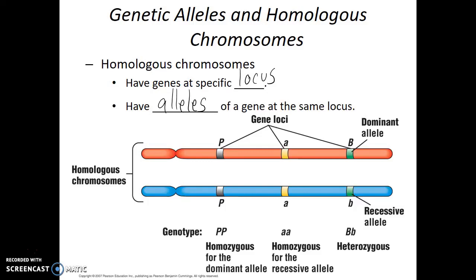When looking at the P gene, we see that this individual is homozygous for the dominant, or capital P, allele — on both chromosomes we see that same capital P allele. This individual is also homozygous for the A gene, but in this case they're homozygous recessive, so we see the little a allele on both homologous chromosomes. The last gene, the B gene — this individual is heterozygous. They received the dominant capital B allele from one parent, and the recessive lowercase b allele from the other parent. But even though those two alleles are different, they're found at the same locus.